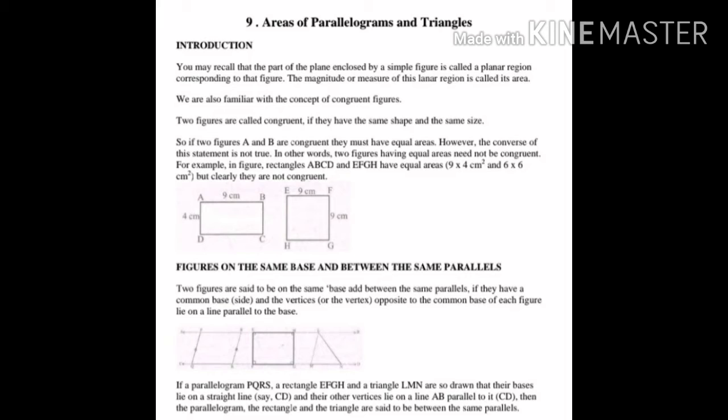So if two figures A and B are congruent, they must have equal areas. However, the converse of this statement is not true — two figures having equal areas need not be congruent. For example, rectangles ABCD and EFGH shown in the diagram have equal areas, but clearly they are not congruent to each other.